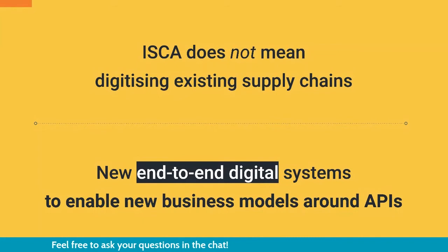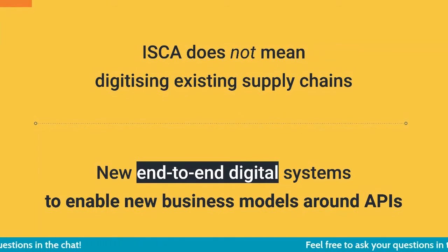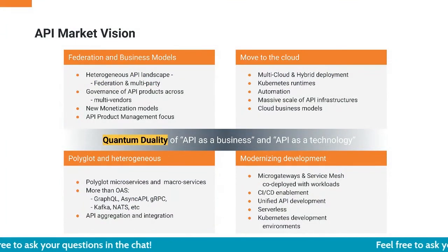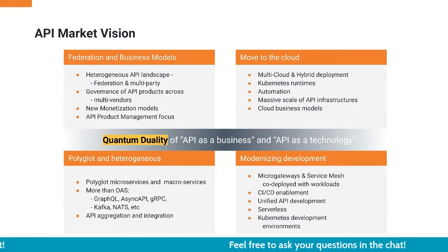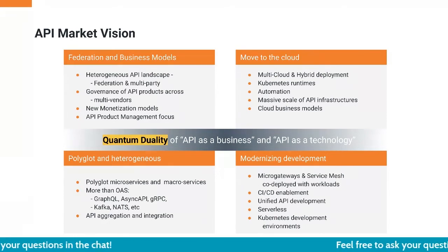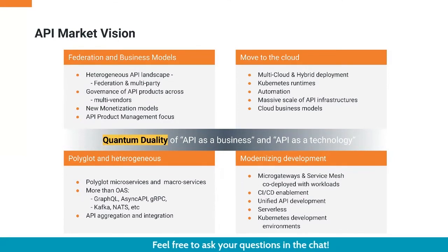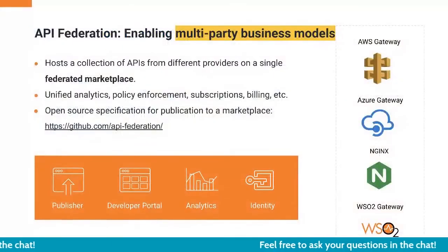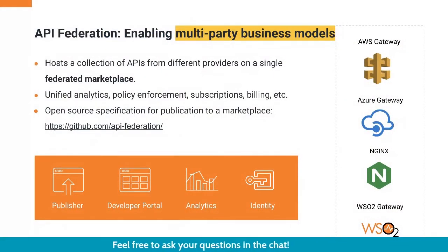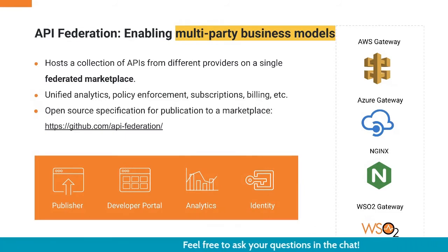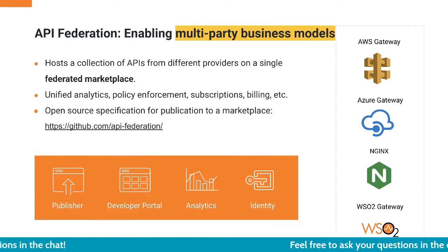This is about how you enable new business models and convert physical or existing supply chains into modern digital supply chains. To do that, we use the concept of the quantum duality of APIs — connecting the technology of APIs with the business of APIs — and create an ecosystem using federation and business models, moving into the cloud and polyglot programming models. API federation is enabled using multi-layered business models, federation of gateways, and federation of marketplaces — building this ecosystem inside the organization using APIs to create an API supply chain.